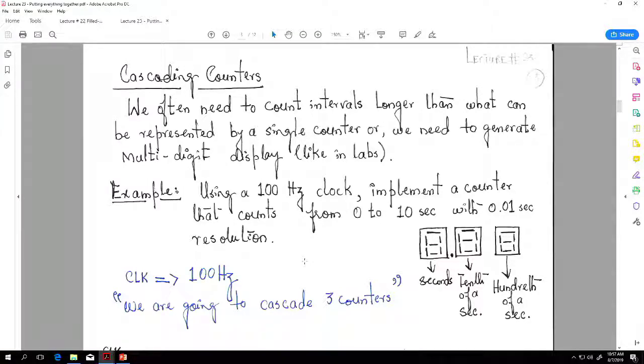Okay, so we often need to count intervals longer than what can be represented by a single counter, or we need to generate multi-digit display like in labs. One of the examples we are doing here today is using a hundred Hertz clock, implementing a counter that counts from 0 to 10 seconds with 0.01 seconds resolution.